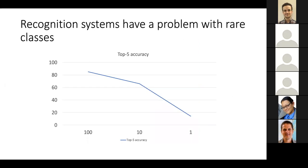For both these reasons, it's important that a recognition system be able to learn new classes with very few training examples. Unfortunately, if we take current recognition systems, they have a problem with these rare classes. Here I'm showing a recognition system which had been trained on something like 600 classes with lots of training examples, then provided an additional roughly 300 classes to add to its vocabulary. As the number of training examples is reduced from 100 to 10 to 1, the accuracy basically falls off a cliff.